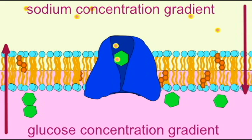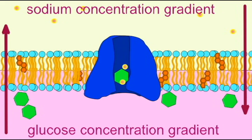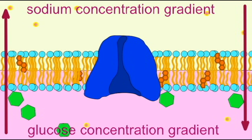Secondary active transport because energy is used to set up a sodium gradient which then directly powers the transport of the second substance such as glucose or amino acids.